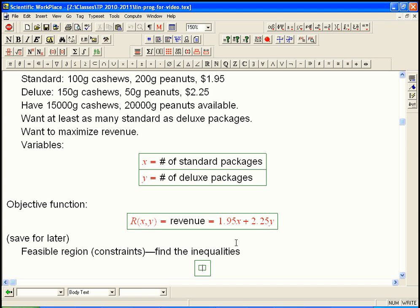So the feasible region is created by the constraints, which are some inequalities that we're going to find that define the feasible region. There's going to be an inequality having to do with the limited supply of cashews. We're going to say, what's the number of cashews that we would want to use for a certain choice? That's going to be a function of x and y. And we're going to look at an inequality saying that has to be less than 15,000. So the cashews that are used up by x standard packages is going to be 100x.